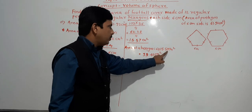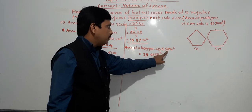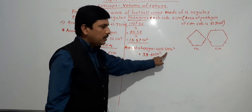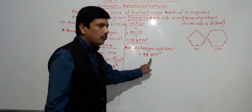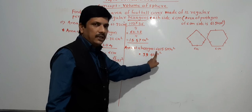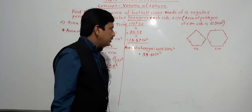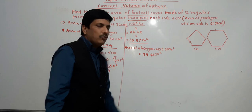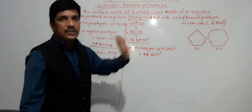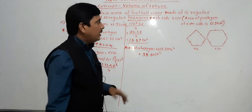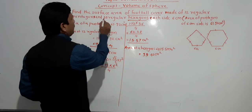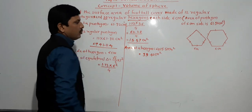Calculating 6 times 15.57: 6 sevens are 42, carry 4; 6 fives are 30 plus 4 equals 34, carry 3; 6 ones are 6 plus 3 equals 9 — giving 93.42 cm square. This is the area of one hexagon. There are 20 regular hexagons, so we need to multiply by 20.